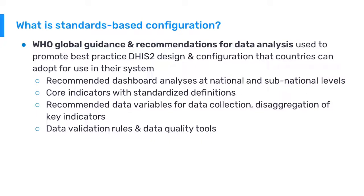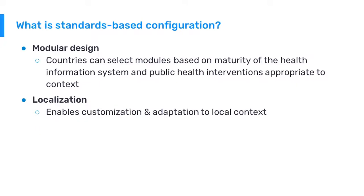Data validation rules and data quality tools further support programs to improve their ability to do program analysis, and these include a number of core DHIS2 apps. An important component of the toolkit is its modular design. Countries can select modules based on the maturity of the health system and what public health interventions are most appropriate to their context. The different modules of the WHO routine HIS toolkit can be selected according to local needs, and the modules are rarely adapted exactly as is — localization and customization to local workflows is an important part of this process.